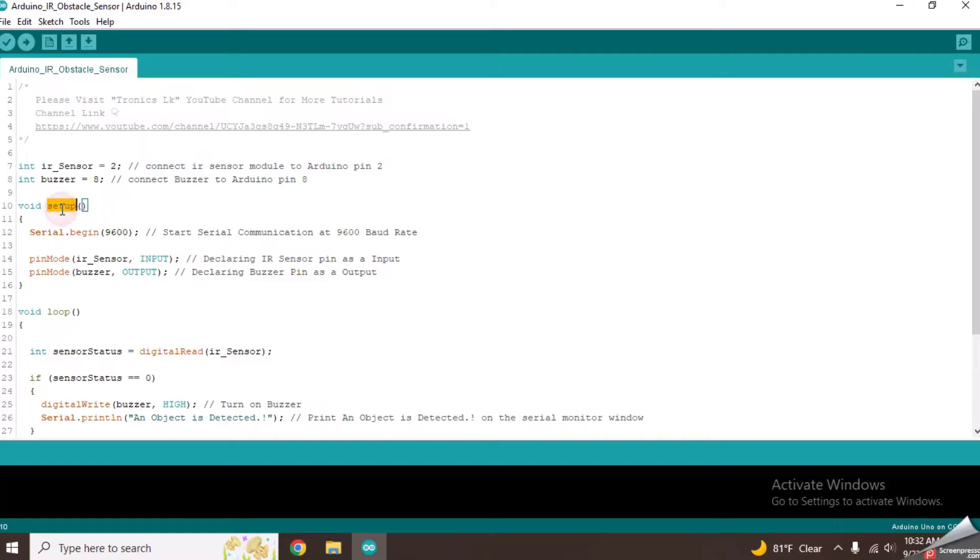Now, let's come into the setup function. From this line, it has started the serial communication at the speed of 9600 baud rate.